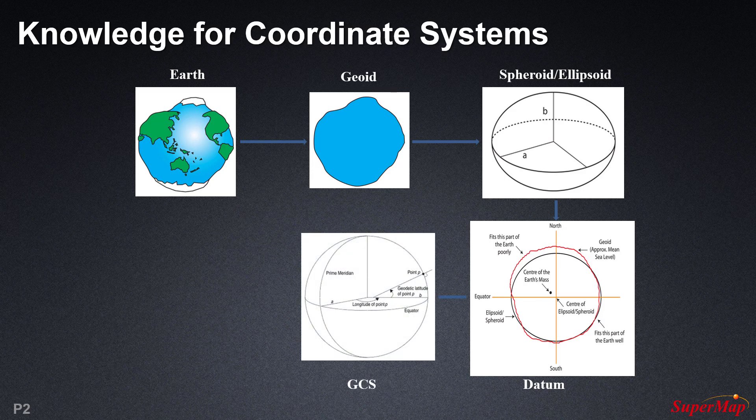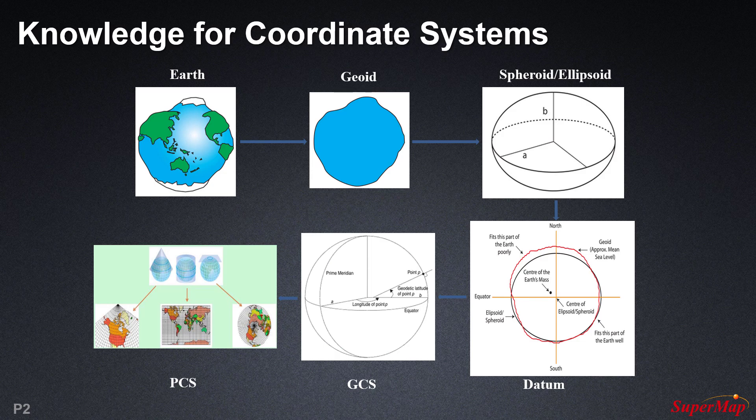A geographic coordinate system, or GCS, uses a three-dimensional spherical surface to define locations on the earth. A GCS includes an angular unit of measure, a prime meridian, and a datum, which is based on a spheroid. A projected coordinate system, or PCS, is defined on a flat, two-dimensional surface. A PCS is always based on a GCS.